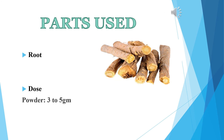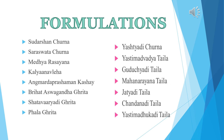The useful part of Yashti Madhu is the root, and the dose in powder form is 3 to 5 grams. Formulations of Yashti Madhu include: Sudarshana Churna, Methi Rasayana, Kalyana Avaleha, Angamardha Prashaman Kashaya, Brihat Ashwagandha Ghrita, Shatapariyadhi Ghrita, Phala Ghrita, Yashtyadi Churna, Yashtimadhyadi Ksheeratail, Guruchyadi Taila, Mahanarayan Taila, Jatyadi Taila, Chandanadi Taila, and Yashti Madhukadi Taila.